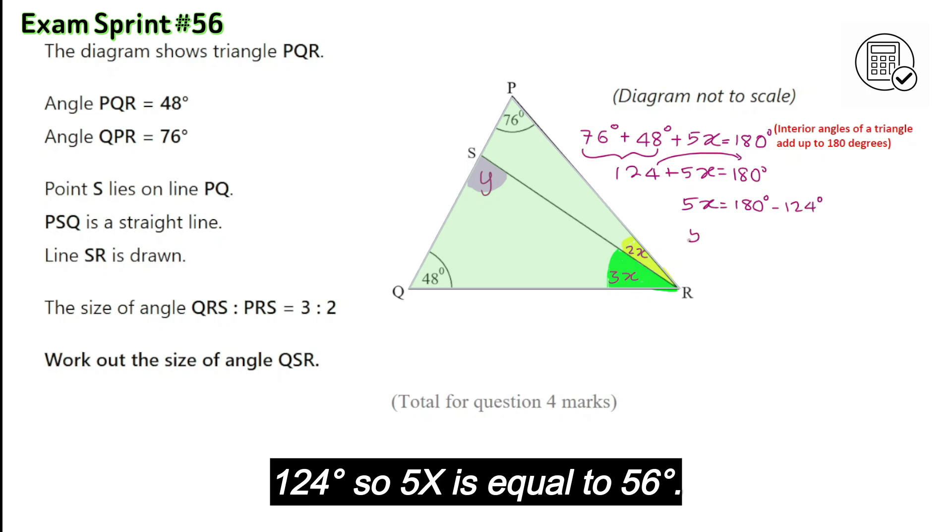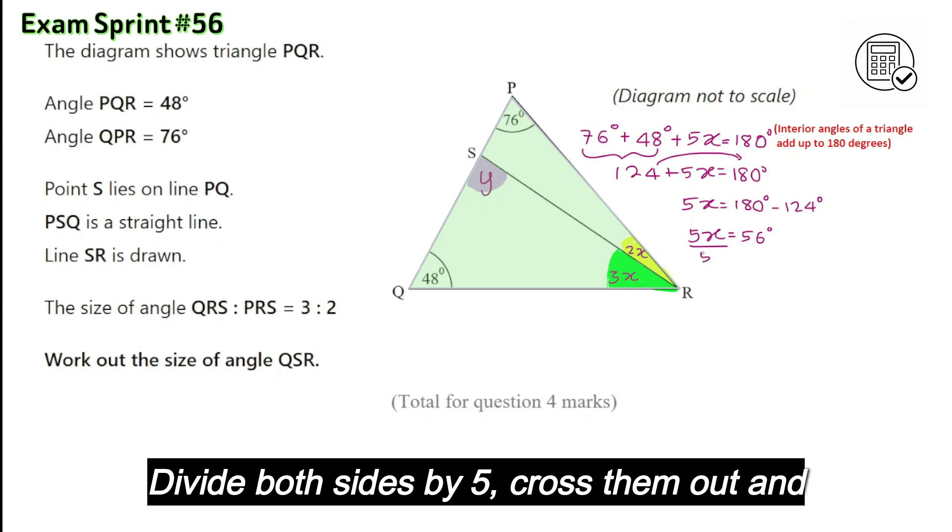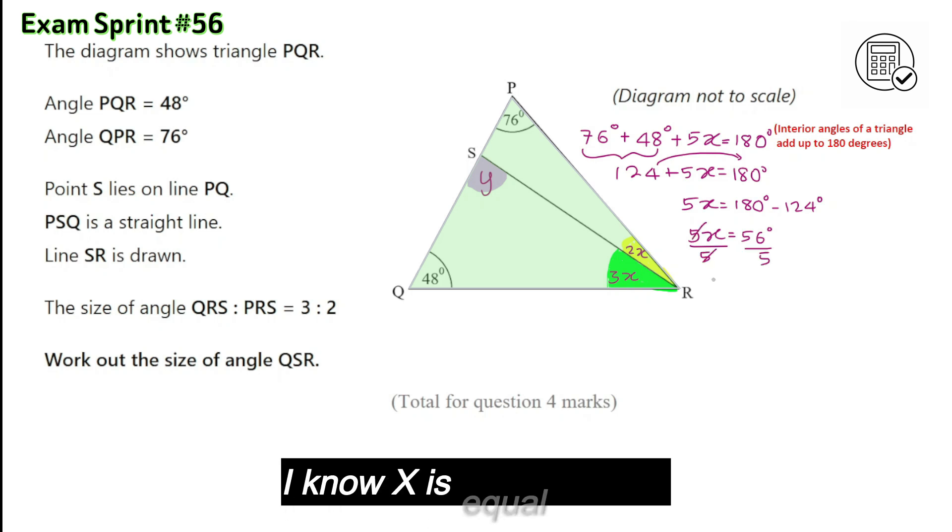So 5X is equal to 56 degrees. Divide both sides by 5, cross them out, and I know X is equal to 11.2.